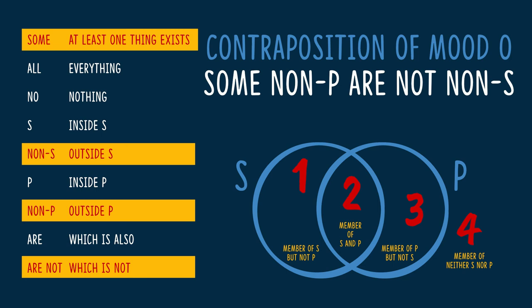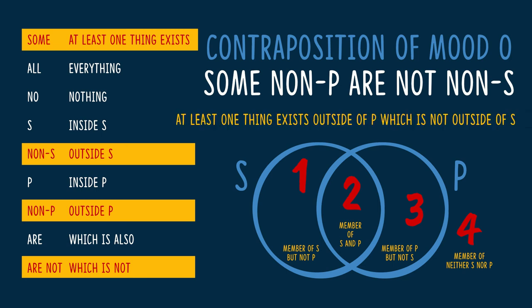Let's go to our translation matrix. We have the statement some, non-P, R-not, non-S. For the quality — some — we translate that as at least one thing exists. The subject, non-P, is translated as outside of P. The copula is R-not, so we translate that as which is not. The predicate is non-S, and we write that as outside of S. Putting that together, we get: at least one thing exists outside of P, which is not outside of S. That's still a bit clunky, but it's better than some, non-P, R-not, non-S.